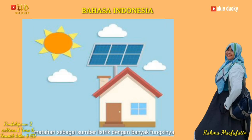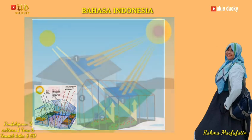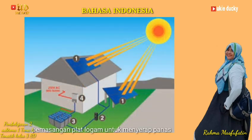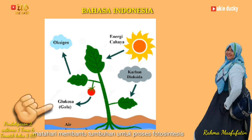Selain menggunakan teknik rumah kaca untuk menyerap panas matahari, kalian juga dapat menggunakan teknik dengan cara memasang plat-plat logam. Plat-plat logam ini kemudian akan menyerap panas matahari dan lalu diubah menjadi energi listrik. Selain itu, sumber energi matahari juga bermanfaat bagi tumbuhan, yaitu untuk membantu dalam proses fotosintesis. Tumbuhan yang memiliki daun hijau dapat menyerap cahaya matahari melalui klorofil. Cahaya matahari ini akan berfungsi untuk membantu proses pembentukan gula pada tumbuhan.